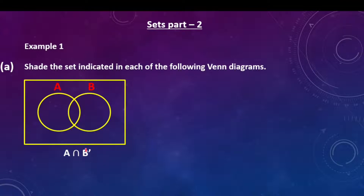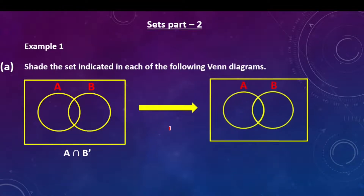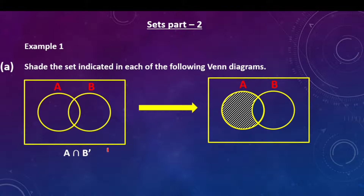So what does it mean here? It means that we shade those members that are in set A but not in set B — that is, those members intersecting with B complement. So these are the members that are not in set B complement. The members that are not in set B are these ones, and these are the members that are intersecting with set A.